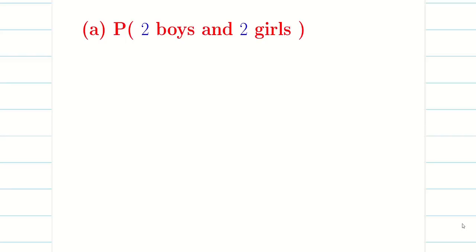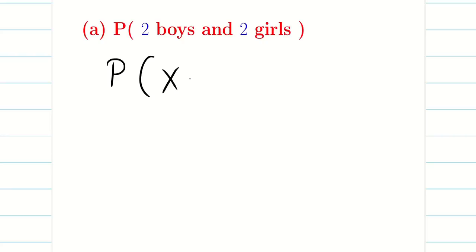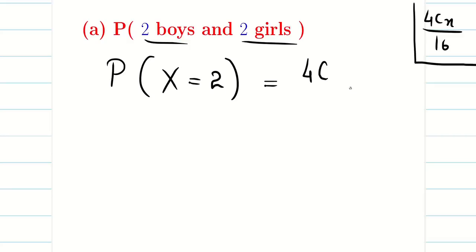Part (a): How many families would have exactly two boys and two girls? X represents boys. If X = 2 boys out of 4 children, the remaining 2 are girls. So we need P(X = 2) = 4C2/16 = 6/16. Note: 4C0=1, 4C1=4, 4C2=6, 4C3=4, 4C4=1.